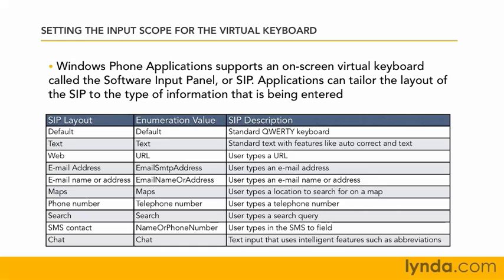This table describes some of the different ways that the SIP can be laid out. At the top of the table you see the default value, which provides the standard QWERTY-style keyboard for typing. However, if you know that the user is going to be typing in a URL for a web address, you can set the input style for a text box to be tailored to typing in a URL — for example, the keyboard will be re-laid out with a little .com button and so on.